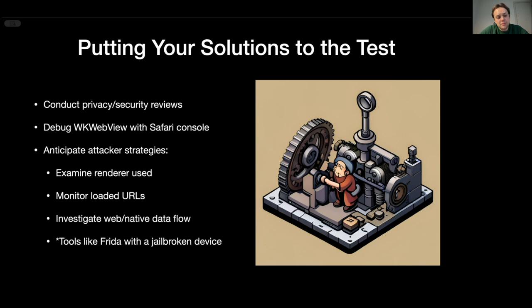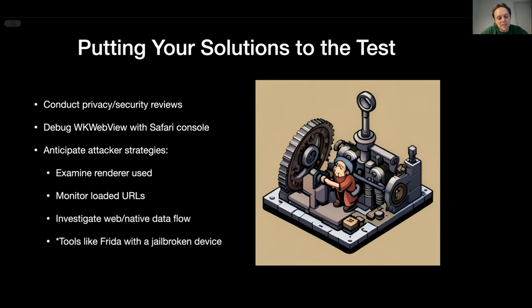Then an attacker will try to monitor loaded URLs — you can also try to analyze what you're actually using your web renderer for, what parameters you are sending. There are also some levels of web-native data flow examination that can be used. An attacker probably won't use just Safari tools because that won't work for an App Store application. But there are tools — for example, Frida is a toolset to examine your web views. An attacker can use a jailbroken device; there are also methods to examine all WKWebView loadURL method calls and which exact parameters have been sent.